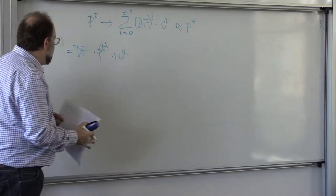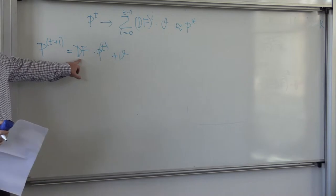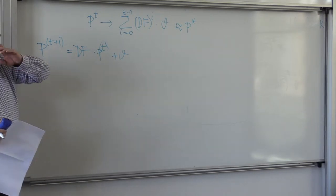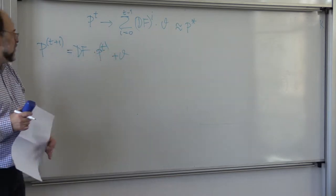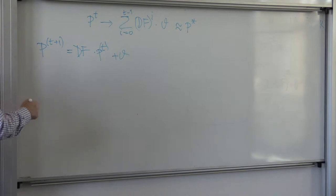So it looks we are still stuck, because DF is this gigantic matrix that involves all the channel attenuations, right? So it looks impossible to get it in a distributed way.